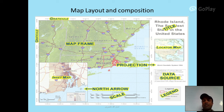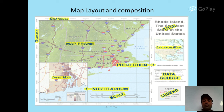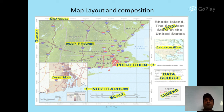Map Layout and Composition: elements include title, locator map, data source, legend, projection, north arrow, scale, inset map, map frame. These are the standard components of map layout and composition.